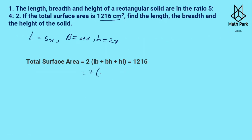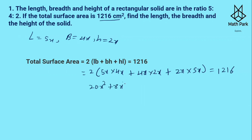Let us put the values into the formula: 2 times (5x × 4x + 4x × 2x + 2x × 5x) = 1216. So 5 times 4 is 20x², 4 times 2 is 8x², and 5 times 2 is 10x². Dividing both sides by 2 we get 608, and 20 + 8 + 10 = 38, so 38x² = 608.